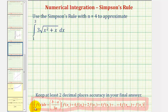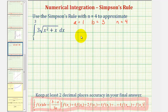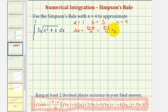To begin, notice that a, the lower limit of integration, is equal to one; b, the upper limit of integration, is equal to three; and we're given n equals four. Next, we'll determine delta x, the width of each subinterval. Delta x equals b minus a divided by n, which is three minus one divided by four, giving us one half or zero point five.